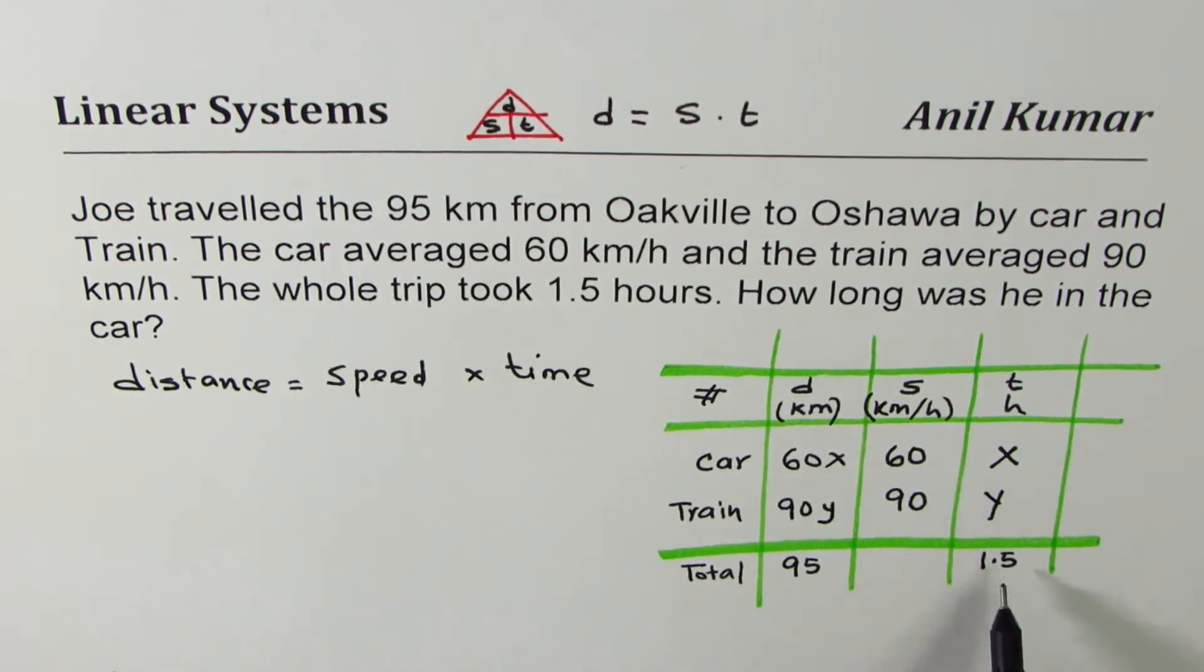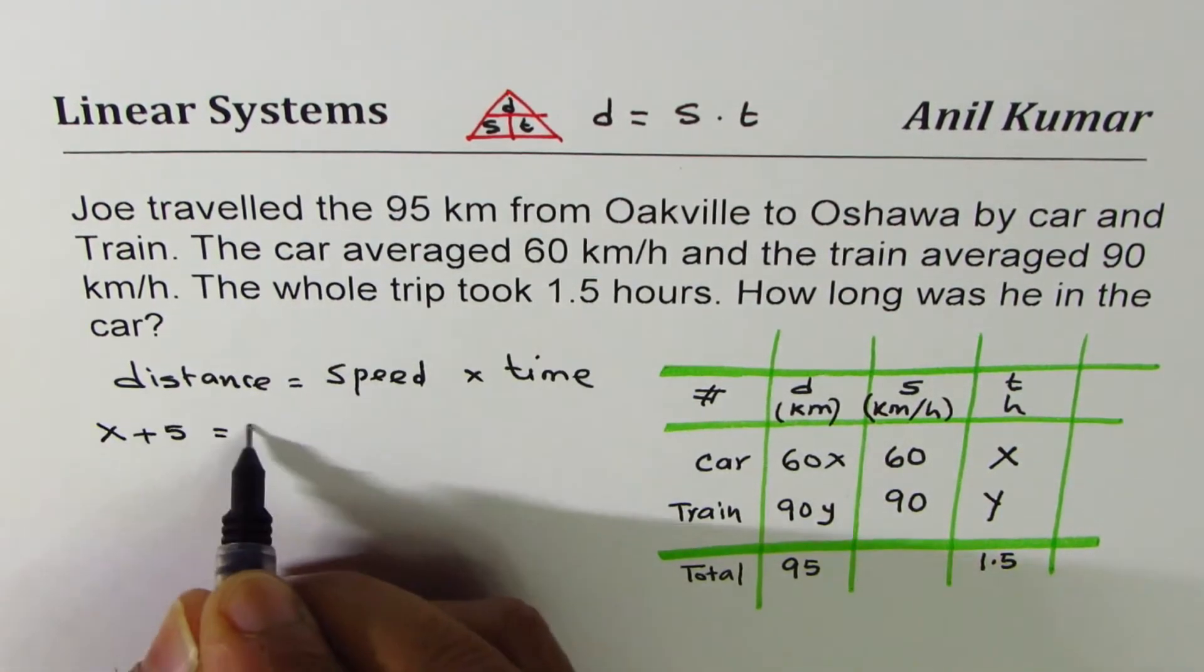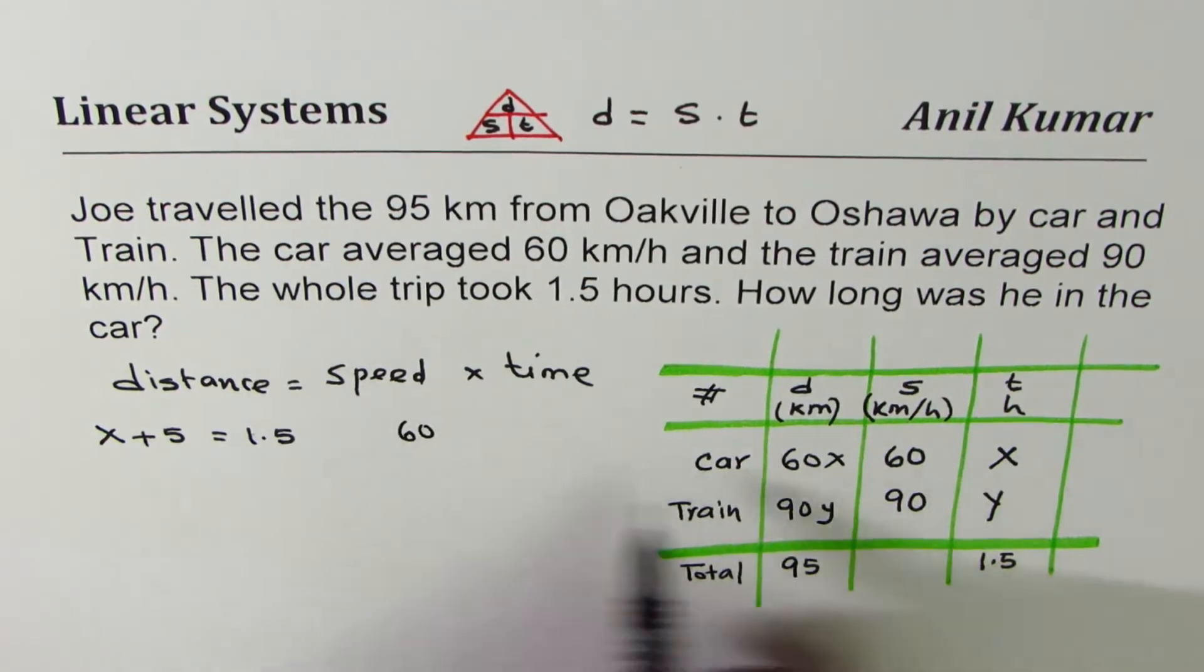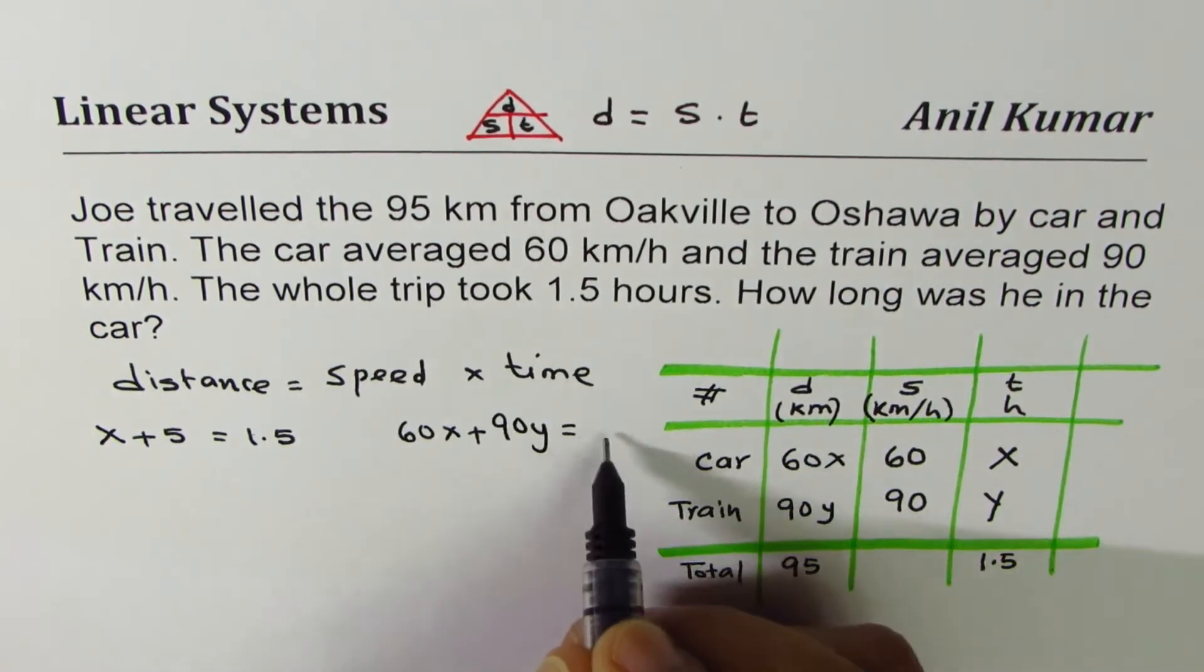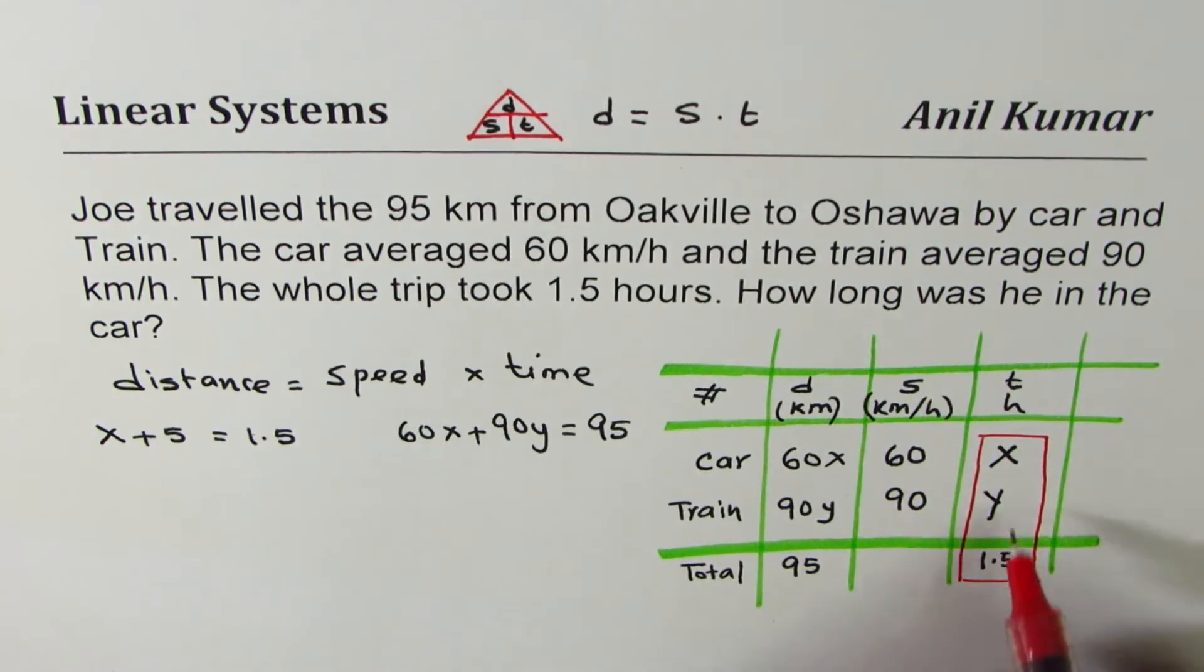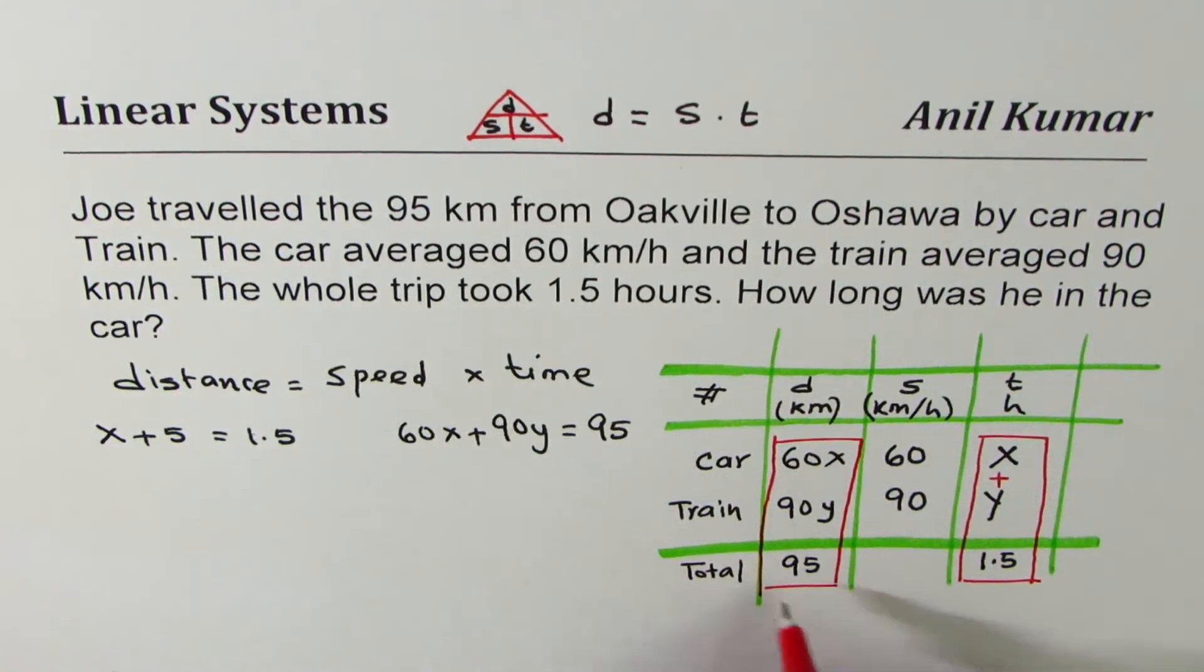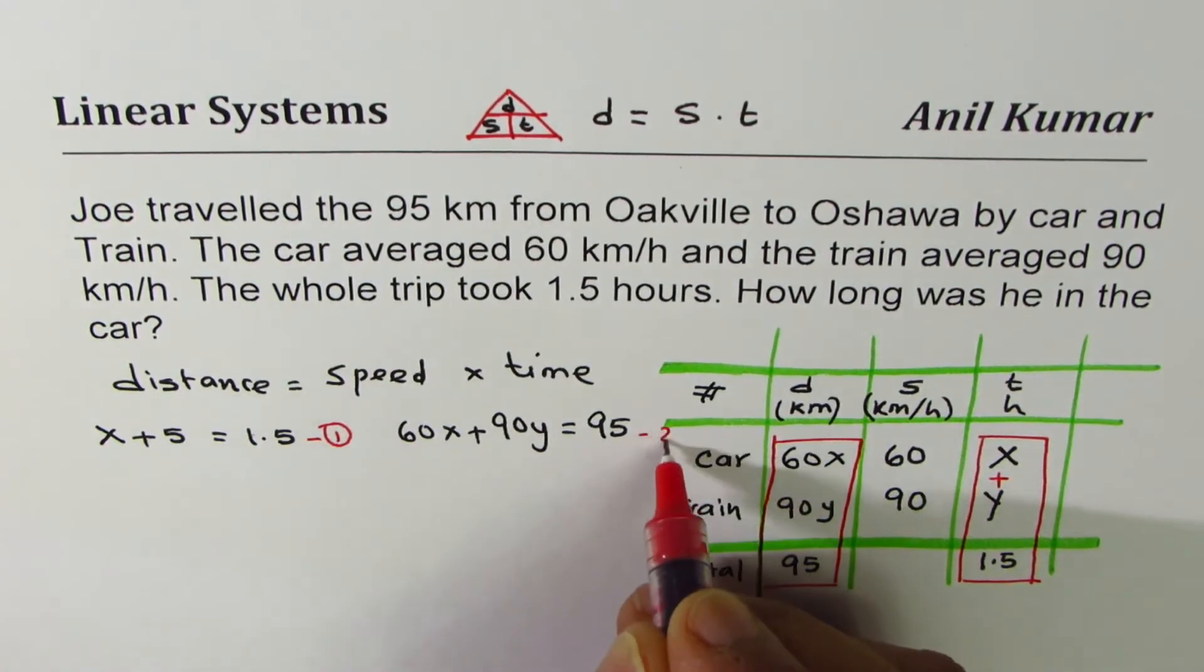Now from here, you get two equations. Total time x plus y is 1.5. The second equation is sum of distances is 95. So it is 60x plus 90y equals to 95. Do you see that? So we get two equations from this. When you add these two, you get 1.5. And when you add distances, you get 95 kilometers. So we get these two equations. Let me call them as equation one and equation two.